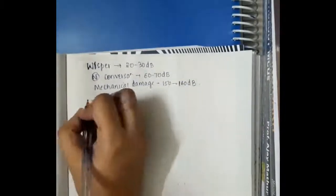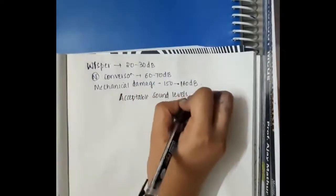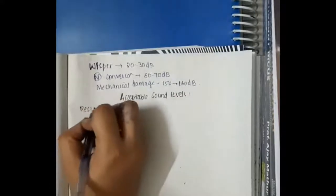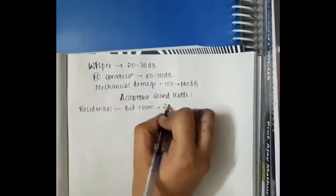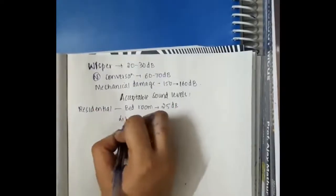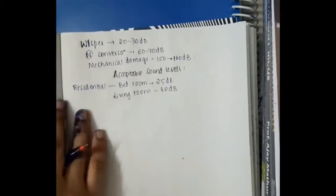Then this list is also important: acceptable sound levels. In residential, that is bedrooms, 25 dB are acceptable. In living rooms, 40 dB is acceptable.